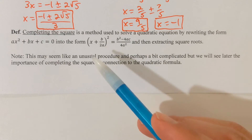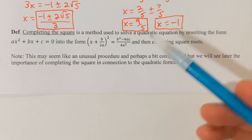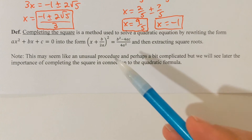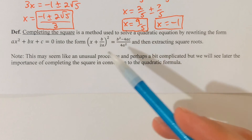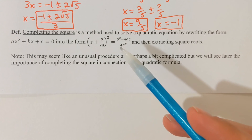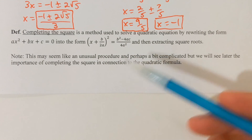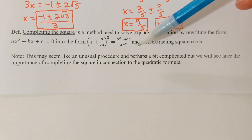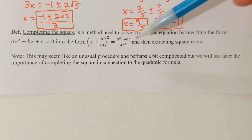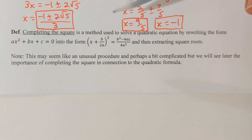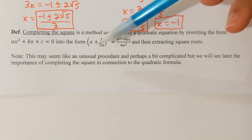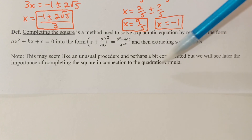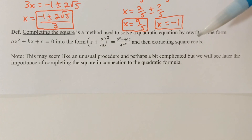This form may look kind of weird and complicated, but it's actually going to make more sense in the next section once we talk about the quadratic formula. There's a connection between the completing the square method and the quadratic formula — I'll comment on that once we get to the next section.